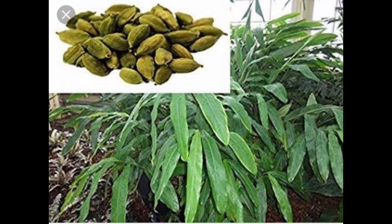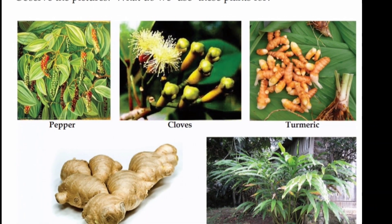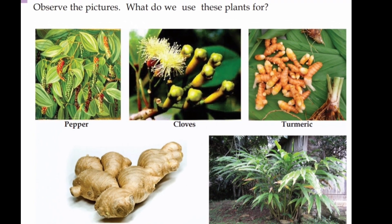We use different parts of plants for food. The edible part in each plant is different — that is, we use different parts of plants for food. We also make use of plants as spices, medicines, and for many other purposes.